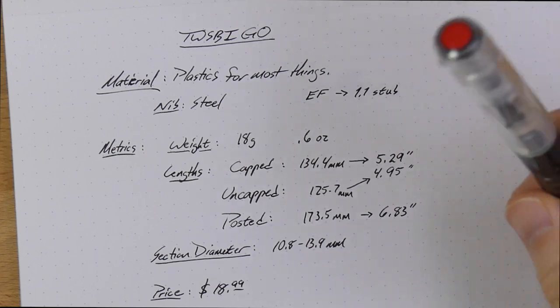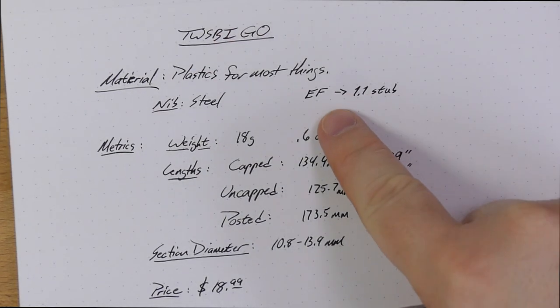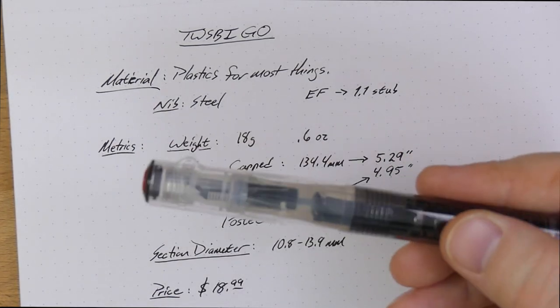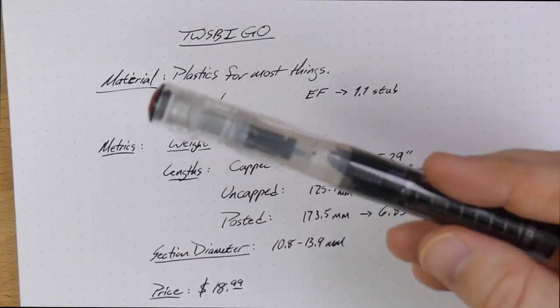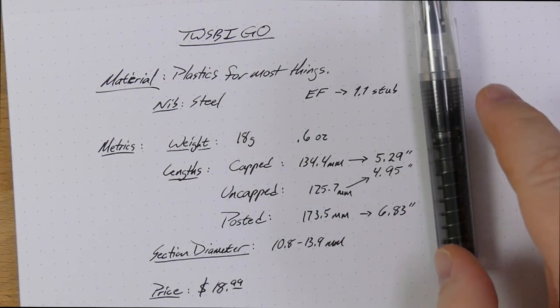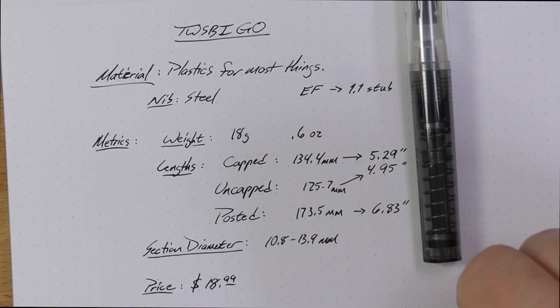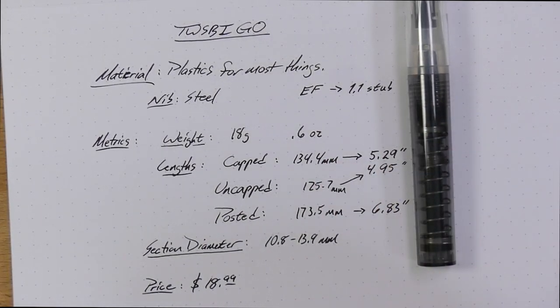The nibs are steel. The body and stuff is plastic. The nibs come in extra fine to 1.1. I went for a medium because, well, I wanted to try it out, frankly. And that was, you know, medium's a solid one to try out. I also really like the fine nibs from TWSBI. I think the fines are the best, probably the best nibs from TWSBI, honestly. So, you know, give that a shot.